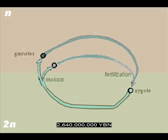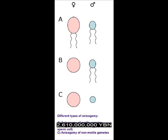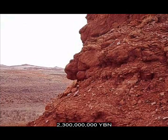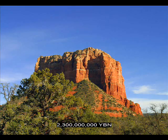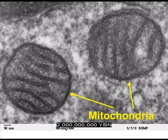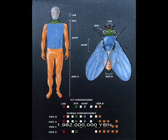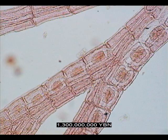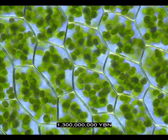Eukaryote sex evolves. First diploid cell — two sets of chromosomes. First zygote. Increase in genetic variety. Eukaryote gender. Bacteria live on land. Oldest red beds — evidence of free oxygen in the air. A captured bacterium becomes a mitochondrion. Homeobox genes regulate the building of major body parts. End of banded iron formation.